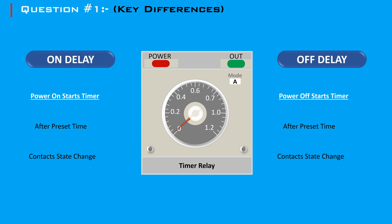The key differences between on-delay and off-delay timers are: On-delay timer delays turning on and requires an input signal to start the timer. Off-delay timer delays turning off and requires the removal of the input signal to start the timer.